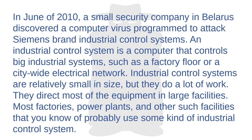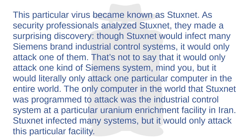In June of 2010, a small security company in Belarus discovered a computer virus programmed to attack Siemens-brand industrial control systems. An industrial control system is a computer that controls big industrial systems, such as a factory floor or a citywide electrical network. Industrial control systems are relatively small in size but they do a lot of work — they direct most of the equipment in large facilities. Most factories, power plants, and similar facilities probably use some kind of industrial control system. This particular virus became known as Stuxnet.